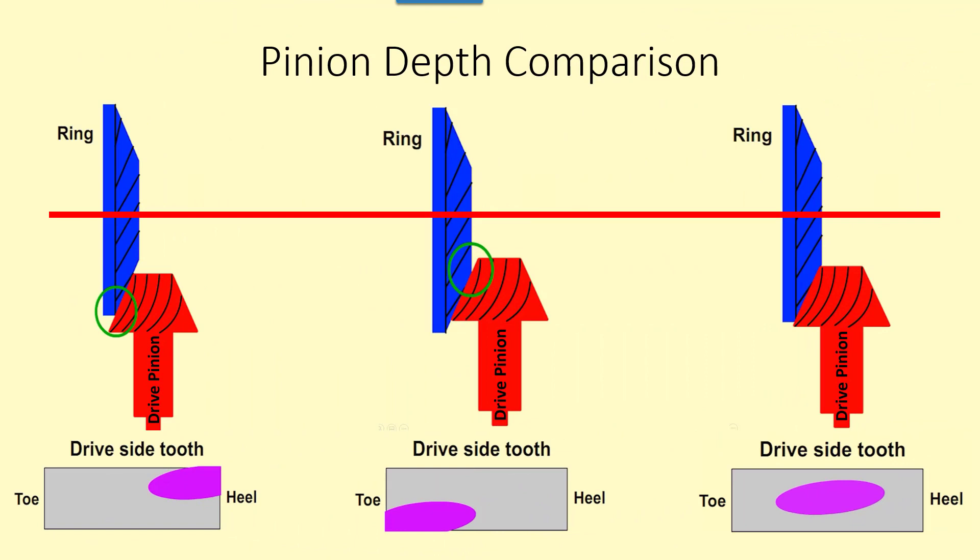It's easy to see how the contact with the ring gear is affected by comparing too much, too little, and just right pinion depth. Too much or too little contact reduces the tooth contact surface area which will reduce how much load the gear tooth can handle.